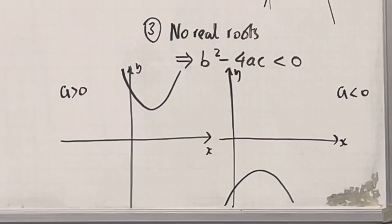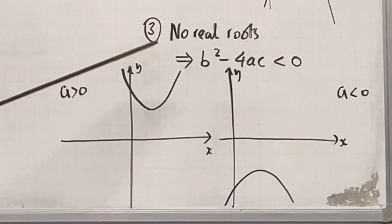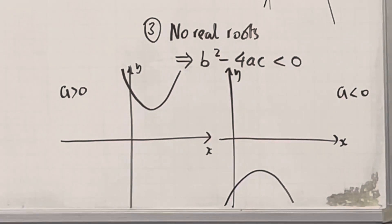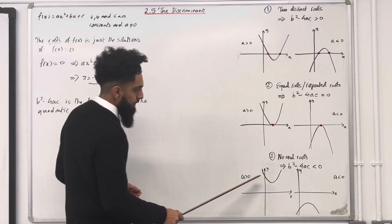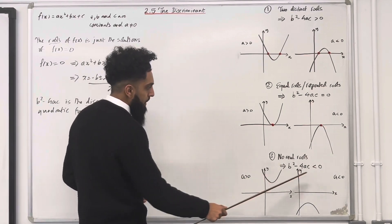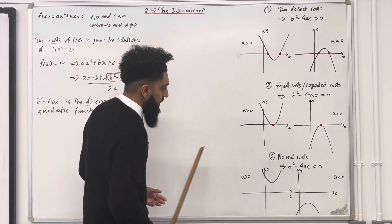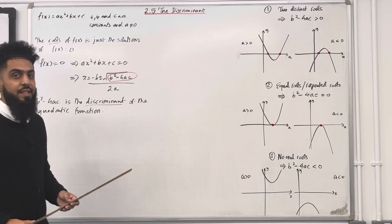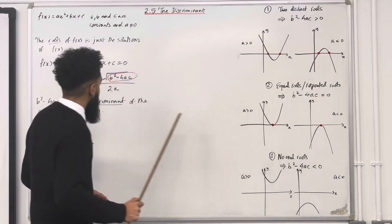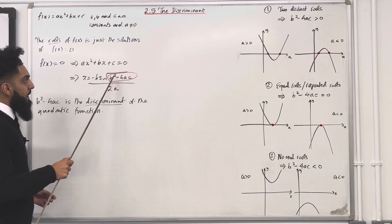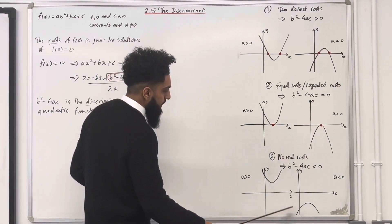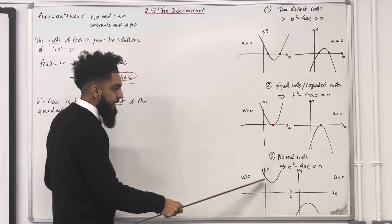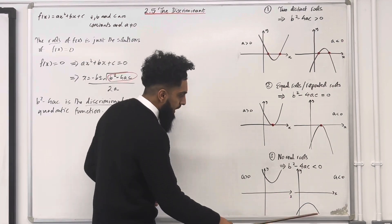Third scenario: no real roots. If you have no real roots, this implies that b squared minus 4ac is less than 0. Graphically, a greater than 0 gives a u-shape, a less than 0 gives an upside-down u-shape. Because the discriminant is less than 0, if you go back to the quadratic formula, you can't take the square root of a negative, hence there are no solutions. Therefore, there will be no x-intercepts — the curve will be either above or below the x-axis.